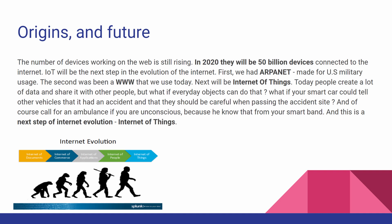Today people create a lot of data and share it with other people. But what if everyday objects could do that? What if your smart car could tell other vehicles that it had an accident and that they should be careful when passing the accident site? And of course call for an ambulance if you are unconscious, because it knows that from your smart band. And this is the next step of internet evolution — Internet of Things.